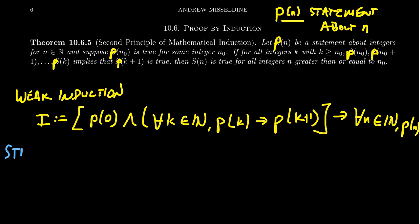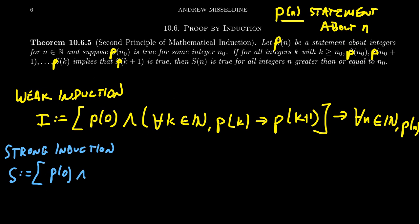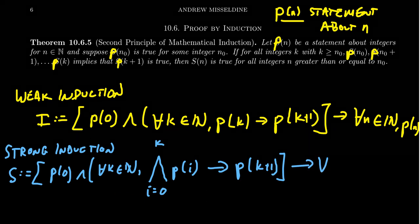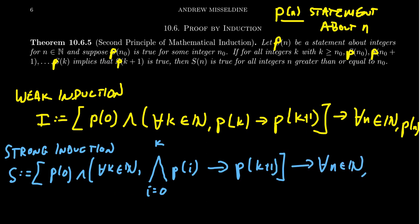Now let's change our perspective to strong induction — we'll call this S. Both principles assume the base case, but the inductive step is very different. For strong induction, for all k in the natural numbers, we have a big 'and' statement where i ranges from 0 to k — we assume all of the previous steps are true. That then implies p(k+1) is true, and so if you have these hypotheses, it implies that for all n in the natural numbers, p(n) holds.